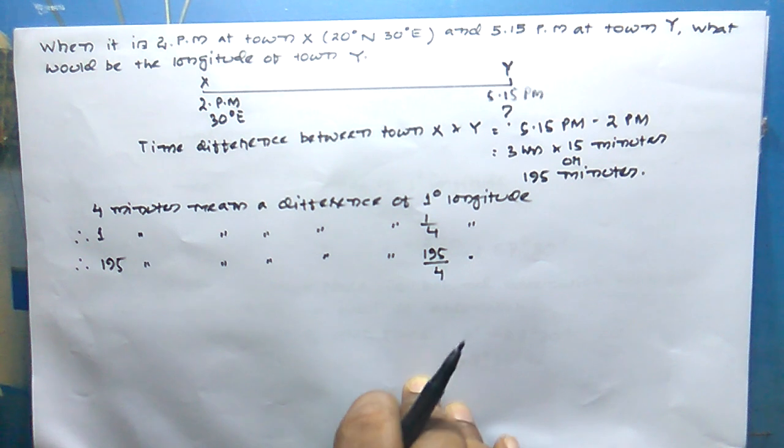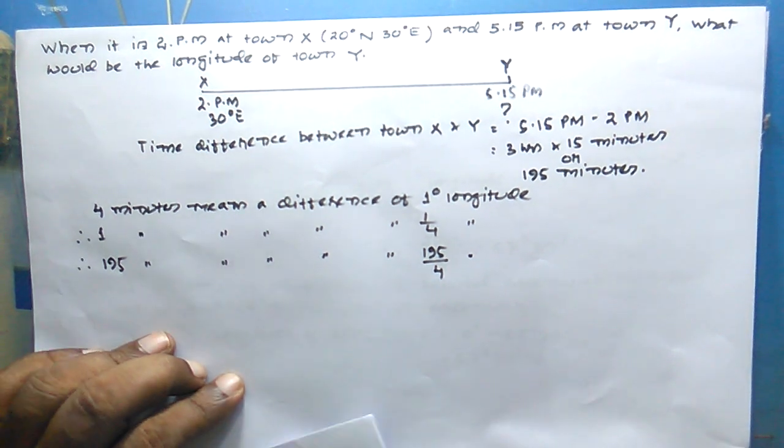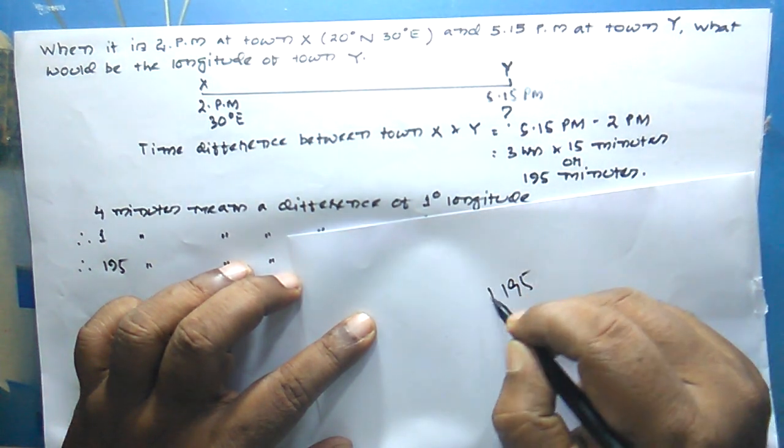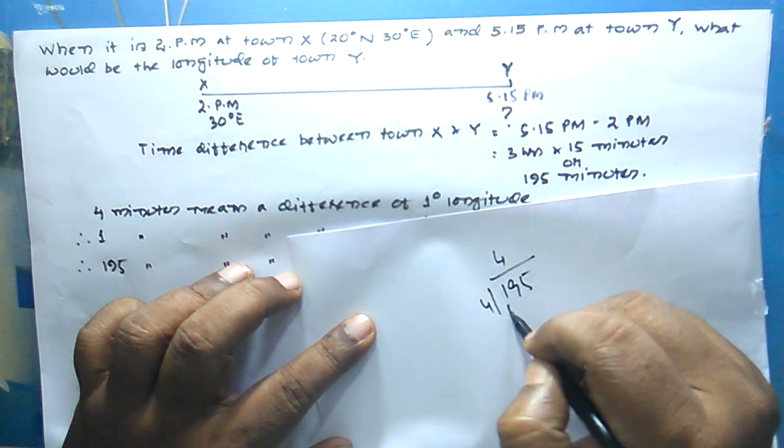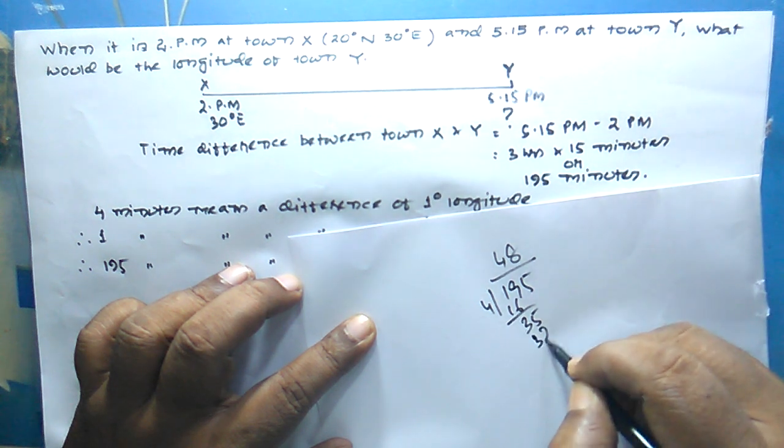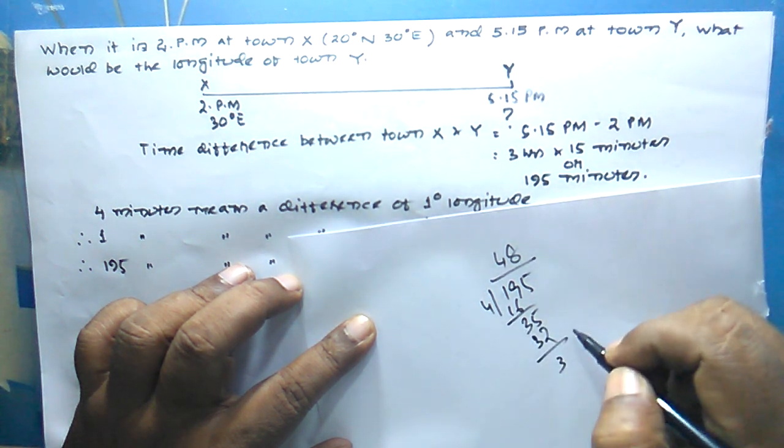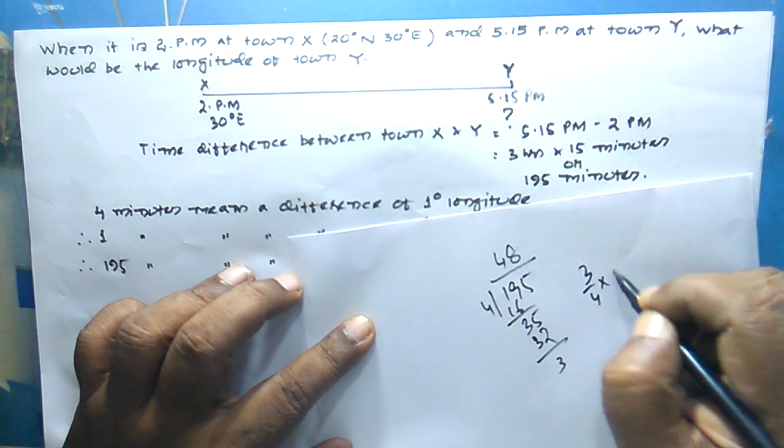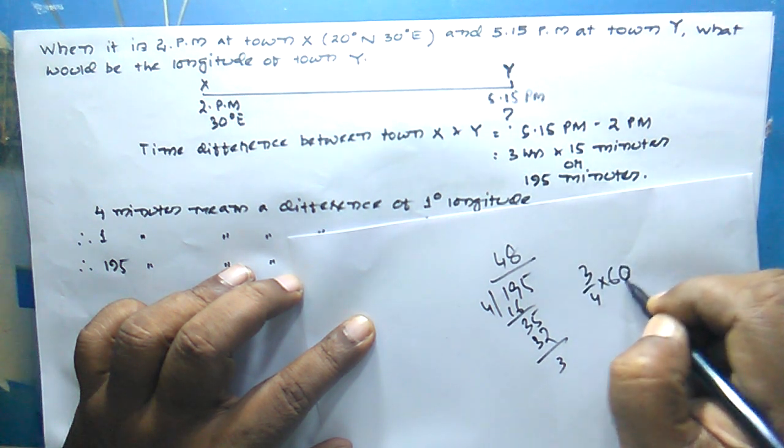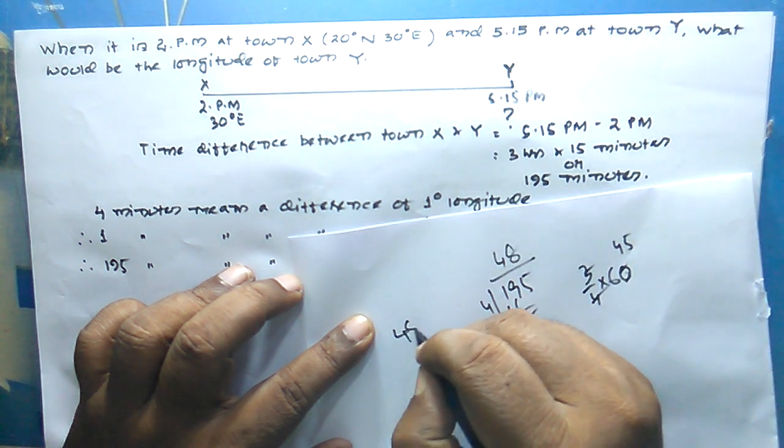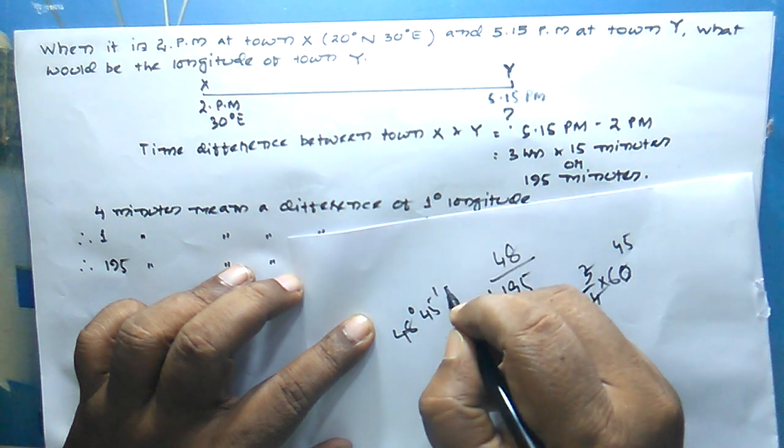As I told you previously, these sums you have to do in rough only. 195 divided by 4... the remainder times 60 gives 45 minutes. So that is 48 degree, 45 minutes.